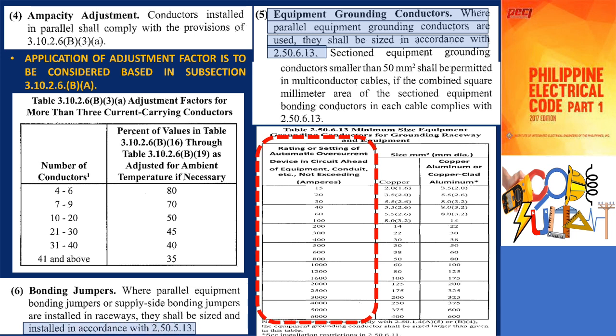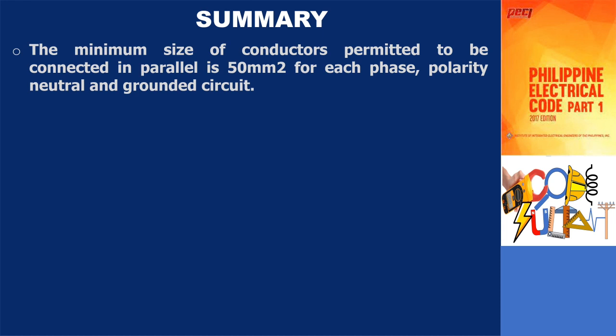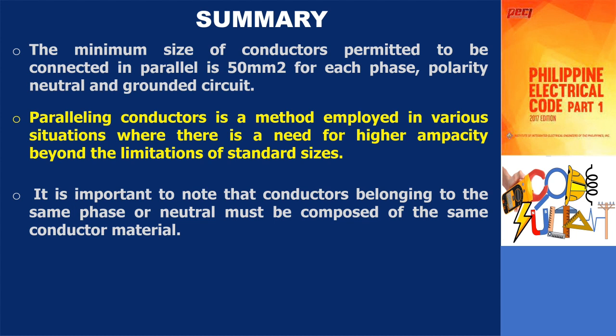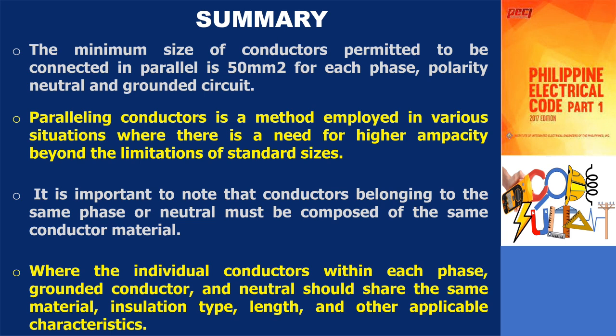In summary, the minimum size of conductors permitted to be connected in parallel is 50 square millimeters for each phase, polarity, neutral, and grounded circuit. Paralleling conductors is a method employed in various situations where there is a need for higher ampacity beyond the limitations of standard sizes. This approach is used when commercially available sizes are not suitable or when the installation process can be simplified by using multiple smaller conductors instead of a single large cable. Additionally, conductors belonging to the same phase or neutral must be made of the same conductor material, ensuring consistency and uniformity, where the individual conductors within each phase, grounded conductor, and neutral should share the same material, insulation type, length, and other applicable characteristics.